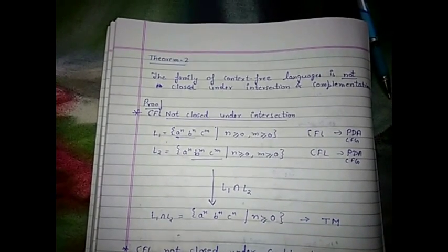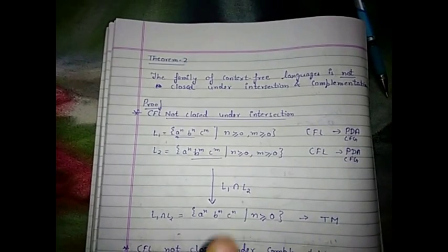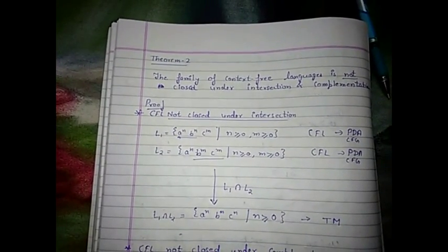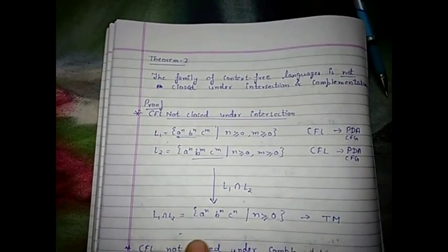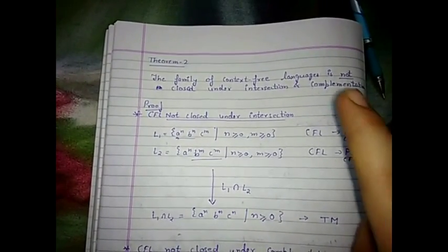If I take the intersection of these two languages, then what will be the language? That will be a language in which the number of a's, b's, and c's are equal. That will be the intersection. So a language in which the three symbols are equal - we know that this is not a context-free language.